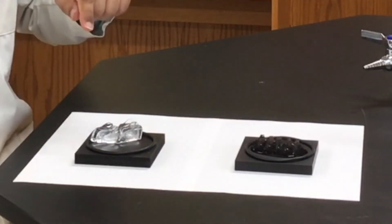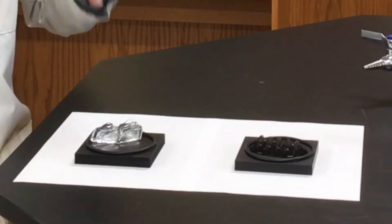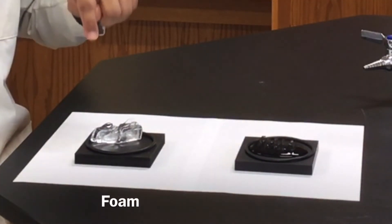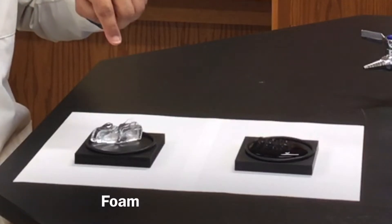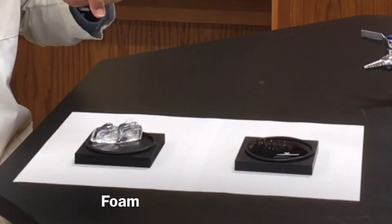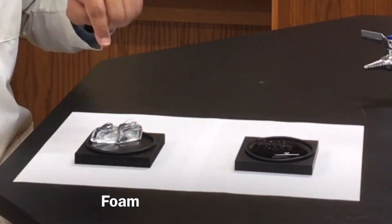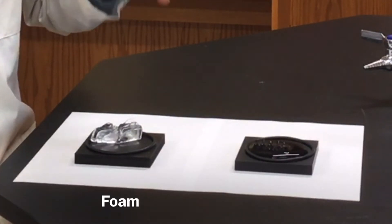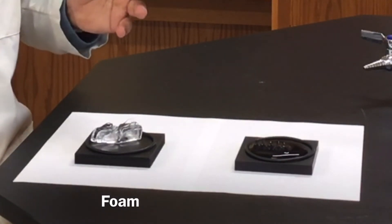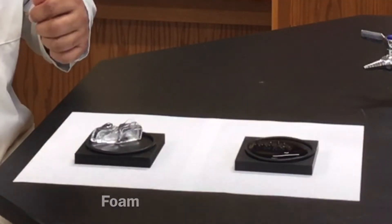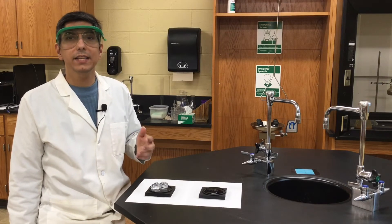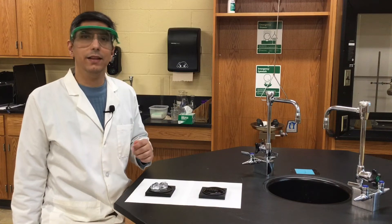Well, the first block is made of foam, which has an extremely high specific heat capacity. That means that it resists temperature change, and it's not conducting much heat at all into the ice. As a result, the ice doesn't melt. So, we can say that high specific heat materials are generally heat insulators.